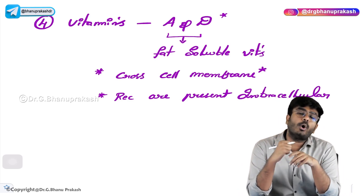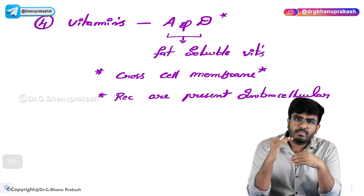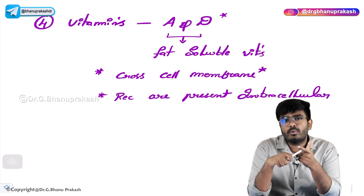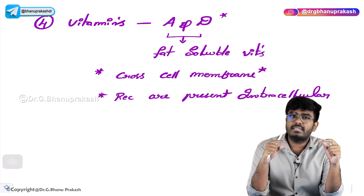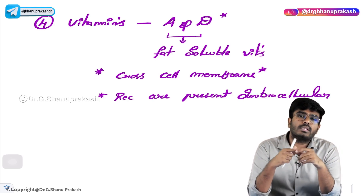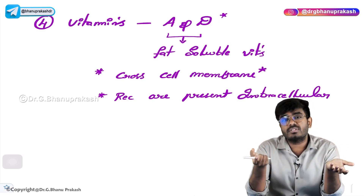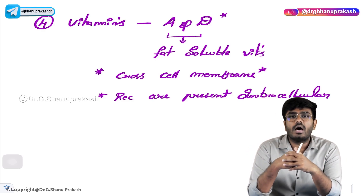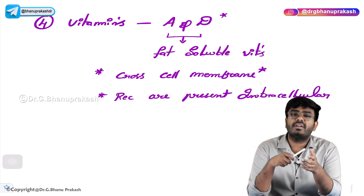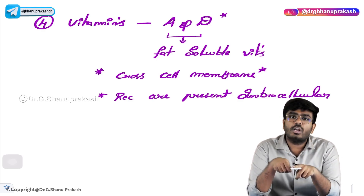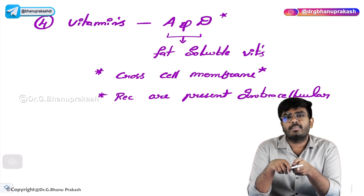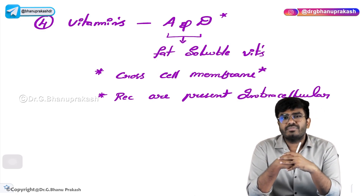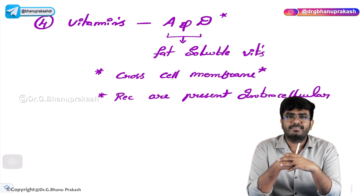So we have discussed all four important classes of hormones. To recap: the first group is single amino acid derivatives; the second group is protein or peptide hormones such as insulin and parathyroid hormone; the third group is cholesterol derivatives, also called steroid hormones, which cross the cell membrane and have intracellular receptors; and the fourth group is vitamins A and D, which are fat-soluble, also cross the cell membrane, and also have intracellular receptors. In the next video, let's discuss the different types of receptors.